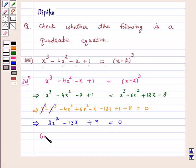The given equation is of the form ax squared plus bx plus c equals 0.